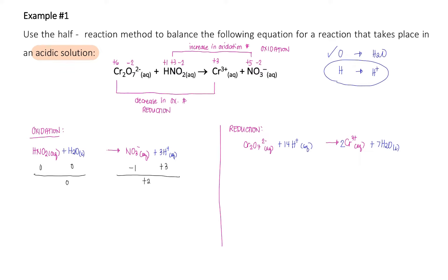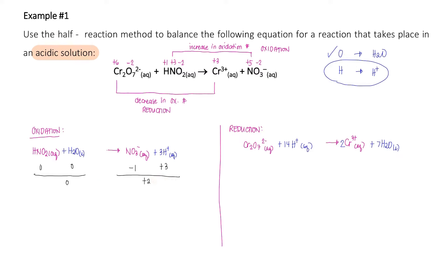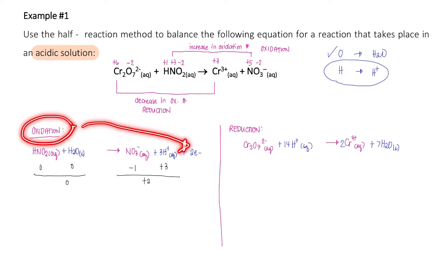To balance the charge in the oxidation half-reaction, we must add electrons to the more positive side. The product side has a total of positive two and the reactant side is zero, so we add two electrons to the product side. In oxidation, electrons are lost, so electrons must always be added on the product side.